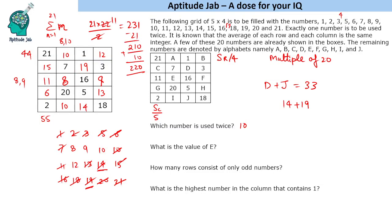Each row will add to 44. Each column adds to 55. This is the solution of this puzzle. Now we can answer the other questions. What is the value of E? E is 8.